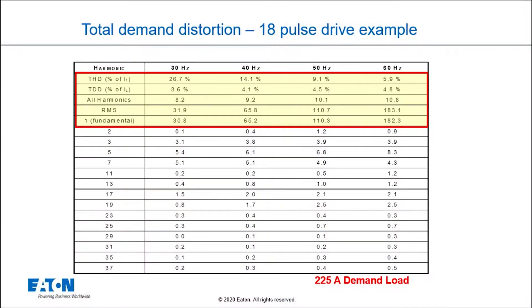Now let's take a look at this graphic. This graphic is really important from the standpoint of IEEE 519. Focus on the all-harmonics line, that's the actual amps of harmonics. You go from 30 hertz at 8.2 amps up to 60 hertz at 10.8 amps. In the THD category at 30 hertz you're running at 26.7 percent distortion.